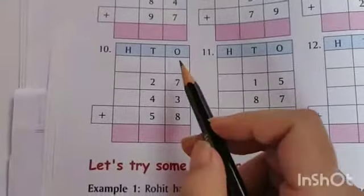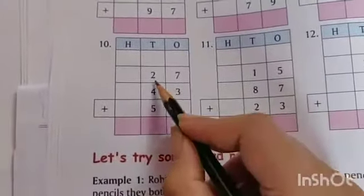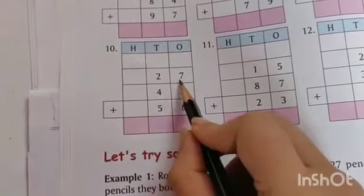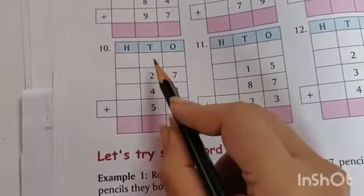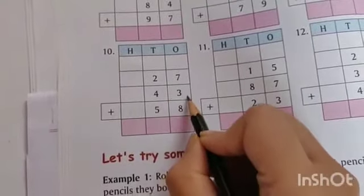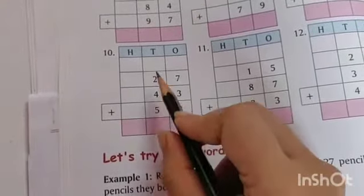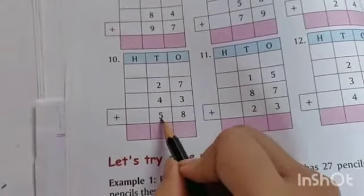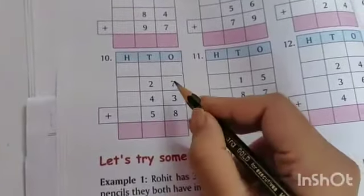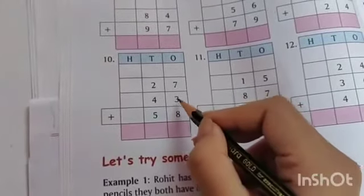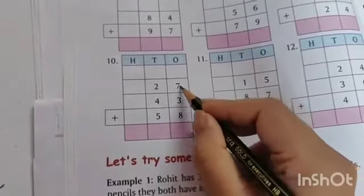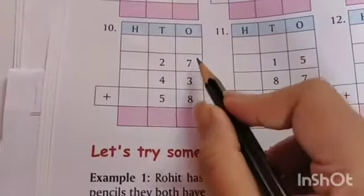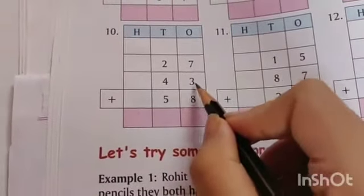Let's solve the 10th equation: 27, 43, and 58. In 27, 7 ones and 2 tens. In 43, 3 ones and 4 tens. And in 58, 8 ones and 5 tens. First add ones column: 7, 3, and 8. 7 plus 3 is 10, and now 10 plus 8.